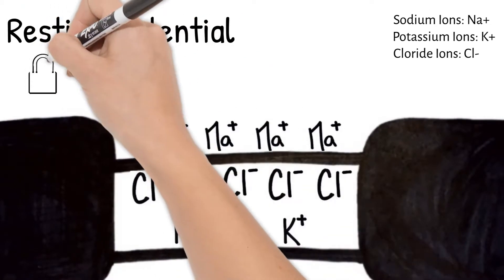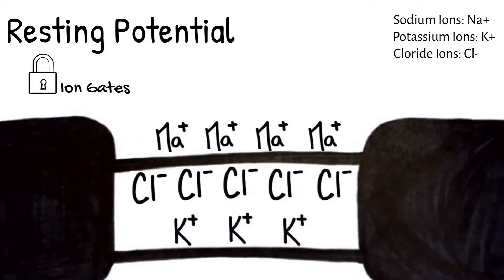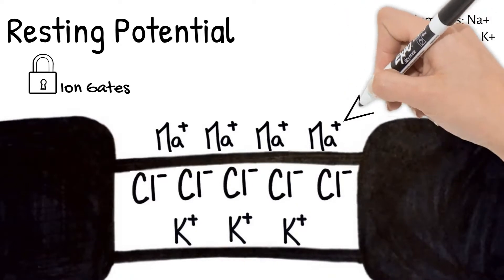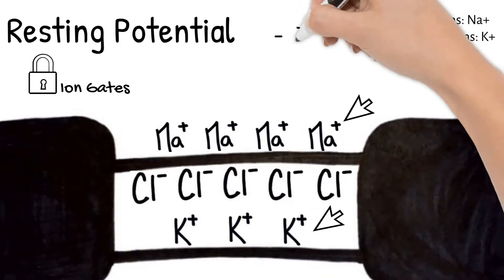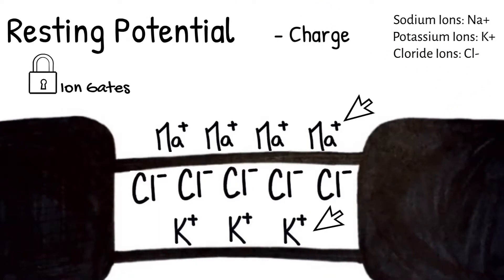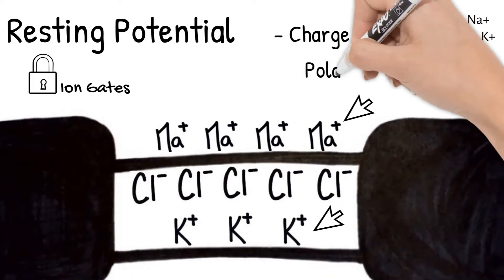At this time, all the ion gates are closed, so everything is staying pretty much where it is. As ions cannot pass through the membrane, they need a gate. There are more sodium ions outside the neuron than there are potassium ions inside, and with the other negative ions and proteins inside, this gives the neuron a negative charge. It's at about negative 70 millivolts and is what we call polarized.